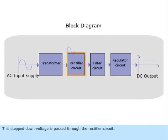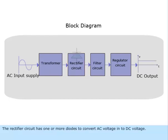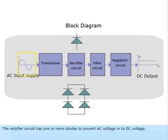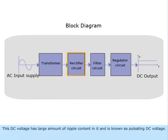This stepped down voltage is passed through the rectifier circuit. The rectifier circuit has one or more diodes to convert AC voltage into DC voltage. This DC voltage has large amount of ripple content in it and is known as pulsating DC voltage.